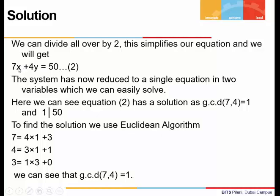Let's call it equation 2. We can see that our system has reduced to one single equation in two unknowns x and y. Solving such an equation is not difficult. We will first check whether it has a solution or not, which we can see obviously has because the GCD of 7 and 4 is 1, and 1 divides the right-hand side 50. So the solution exists.